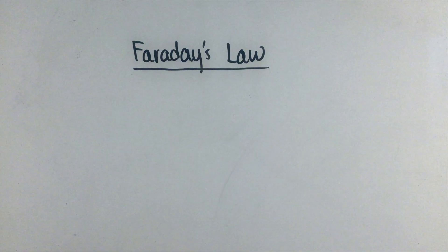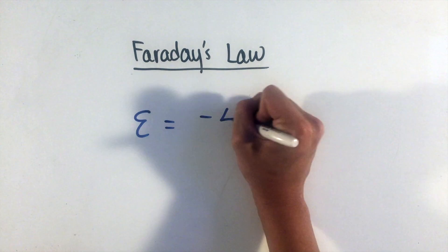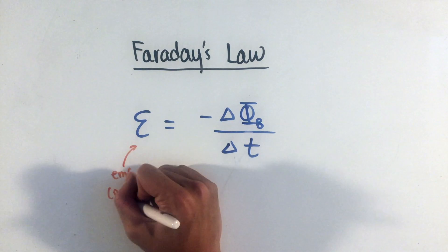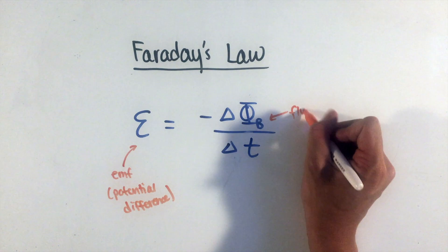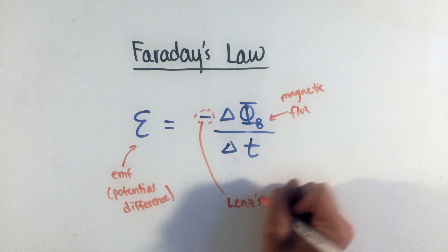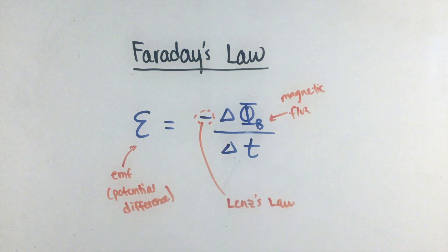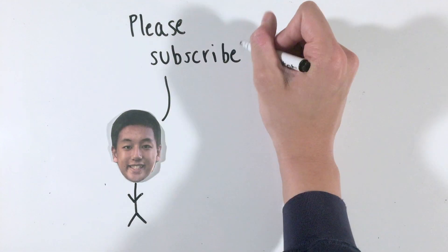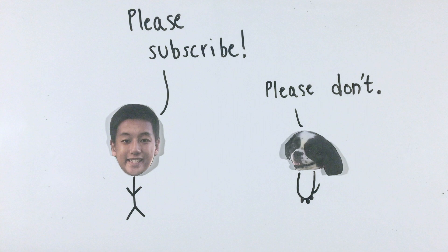These changes in magnetic flux are described by Faraday's Law of Induction, which states that the EMF, or potential difference, produced is the negative rate of change of magnetic flux. The negative sign reveals a different phenomenon called Lenz's Law, which states that any EMF or current induced will always oppose the original changes in magnetic flux. With that, you can feel good about learning a crash course on the basics of magnetism and electromagnetic induction.